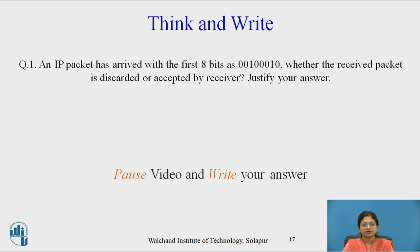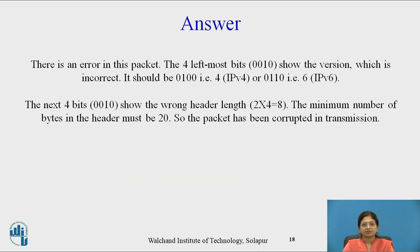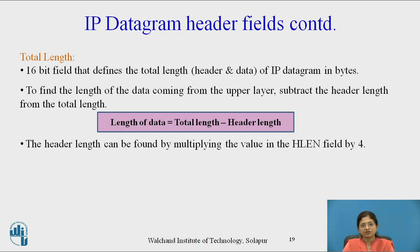Pause the video and write down the answer to this question: An IP packet has arrived with the first 8 bits as 0010 0010. Whether the received packet is discarded or accepted by the receiver — justify your answer. There is an error in this packet. The 4 leftmost bits (0010) show the version as 2, which is incorrect — it should be 0100 (4) for IPv4 or 0110 for IPv6. The next 4 bits (0010) show a wrong header length of 2 × 4 = 8 bytes, but the minimum must be 20. So the packet has been corrupted in transmission.